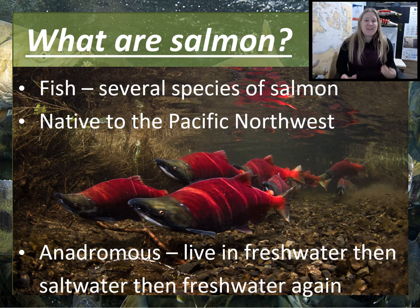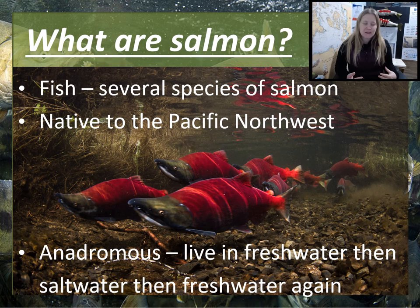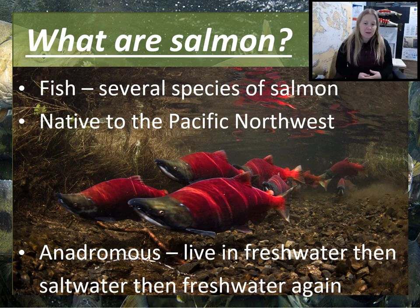So first, what are salmon? Salmon are a type of fish. They are native to the Pacific Northwest and there are several species of salmon that are all part of the same family. We'll learn more about all of the different species in the next presentation, but today we're going to focus on the salmon family. One of the things that makes salmon unique is that they are anadromous — that means they spend part of their lives in freshwater and part in saltwater. Not many fish can do this, so this is really special.